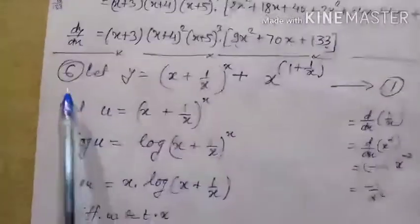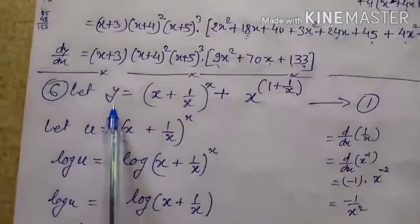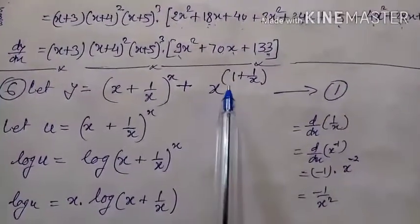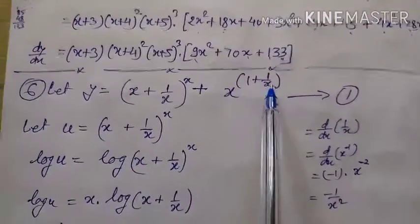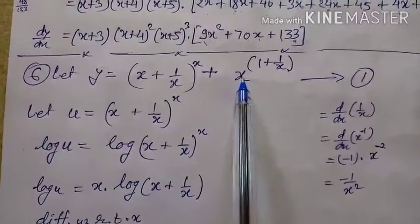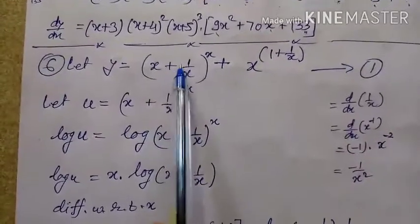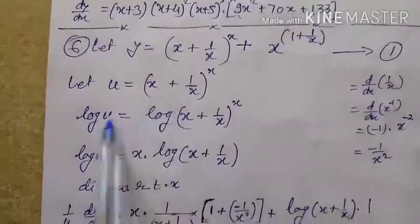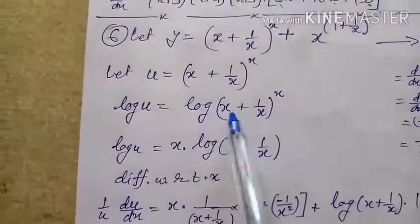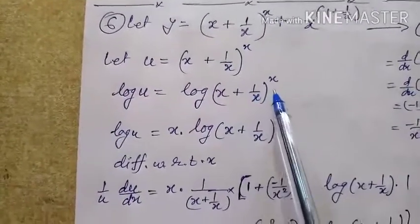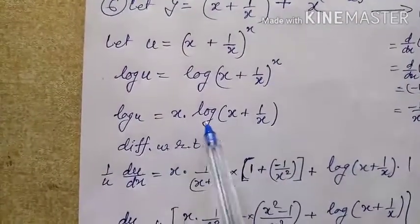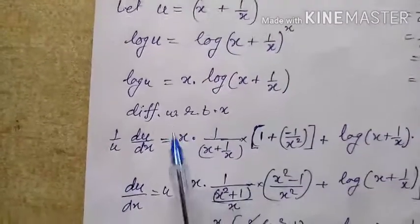Question number 6: let y = (x + 1/x)^x + x^(1 + 1/x). Once again there are two terms, so suppose the first term is u and the second term is v. Give equation number 1. For the first term u = (x + 1/x)^x, taking log of both sides: log u = log(x + 1/x)^x. By the power rule this x comes down: x · log(x + 1/x).